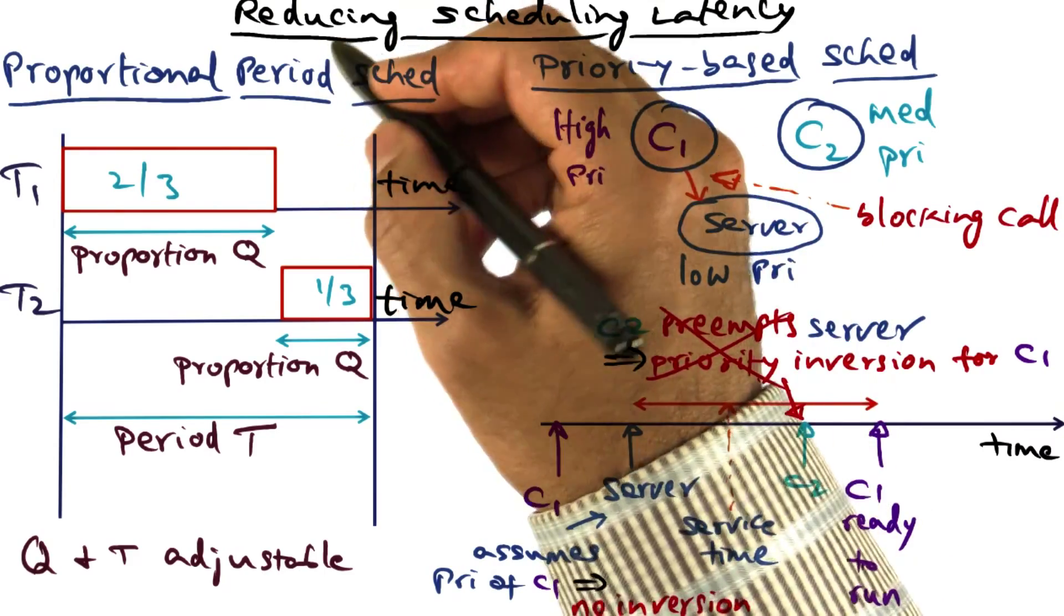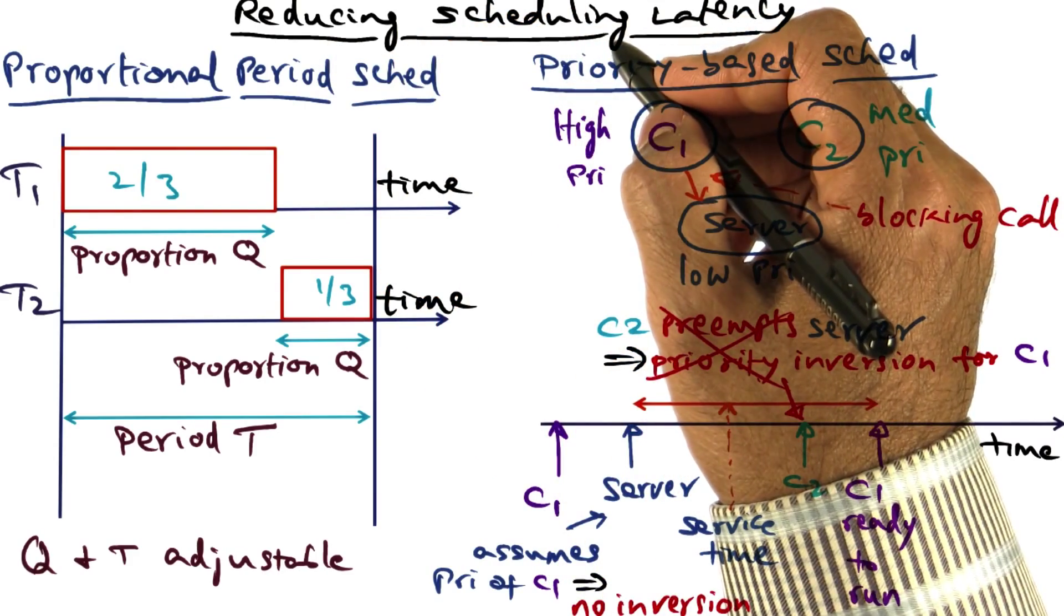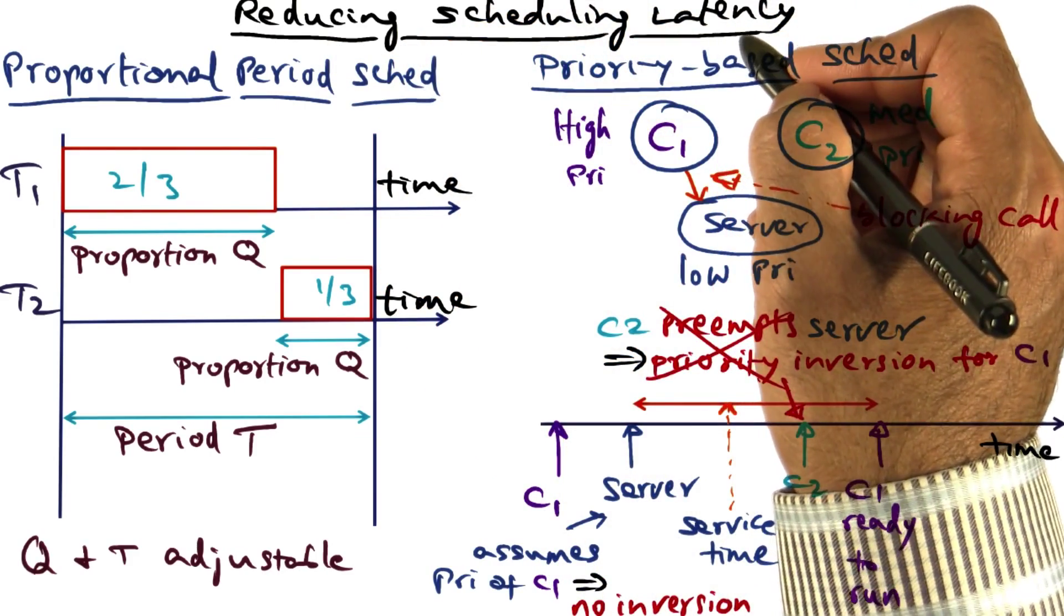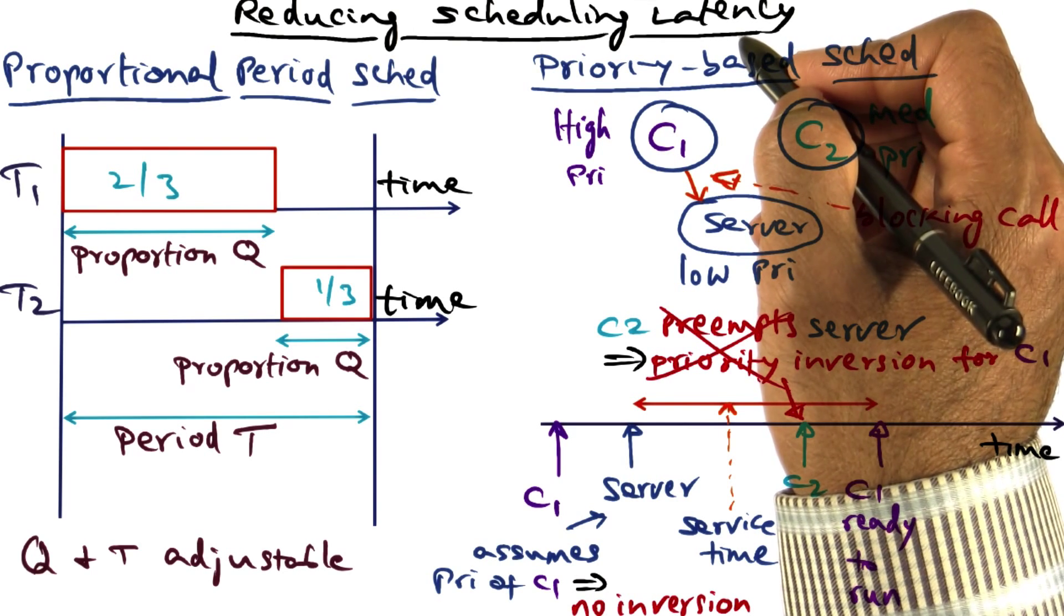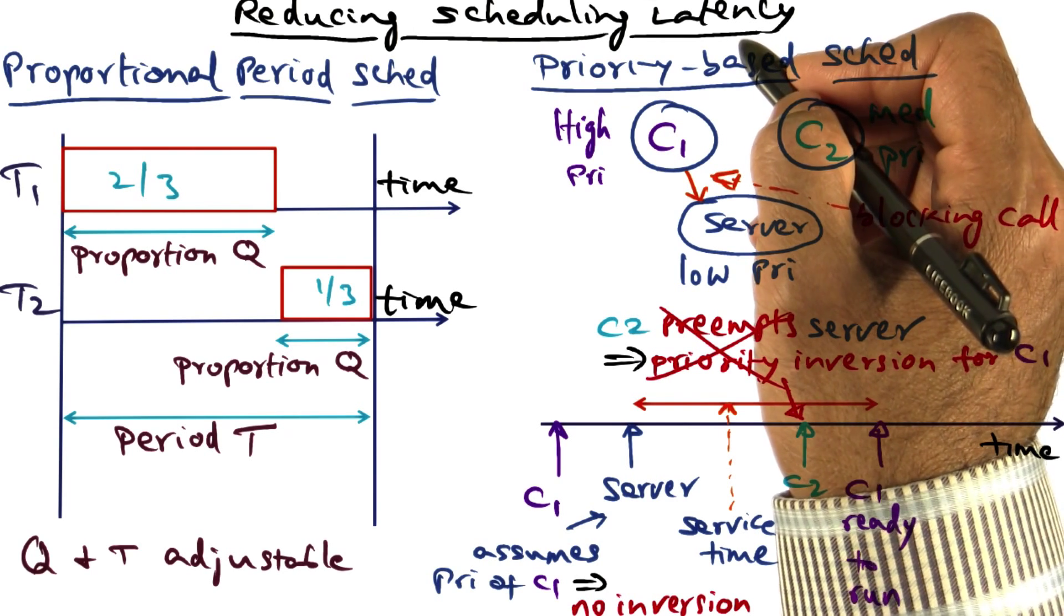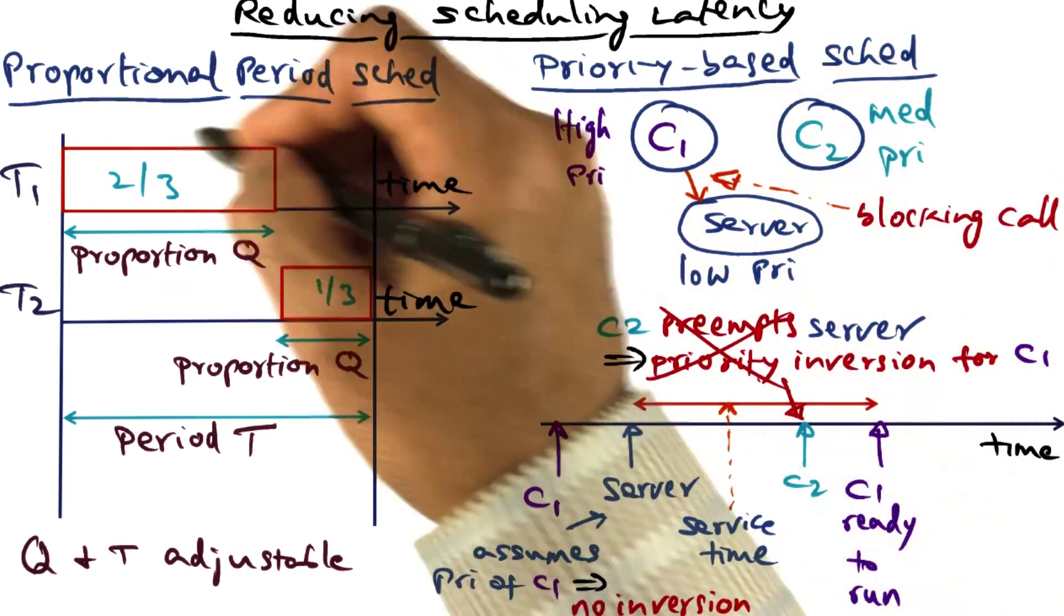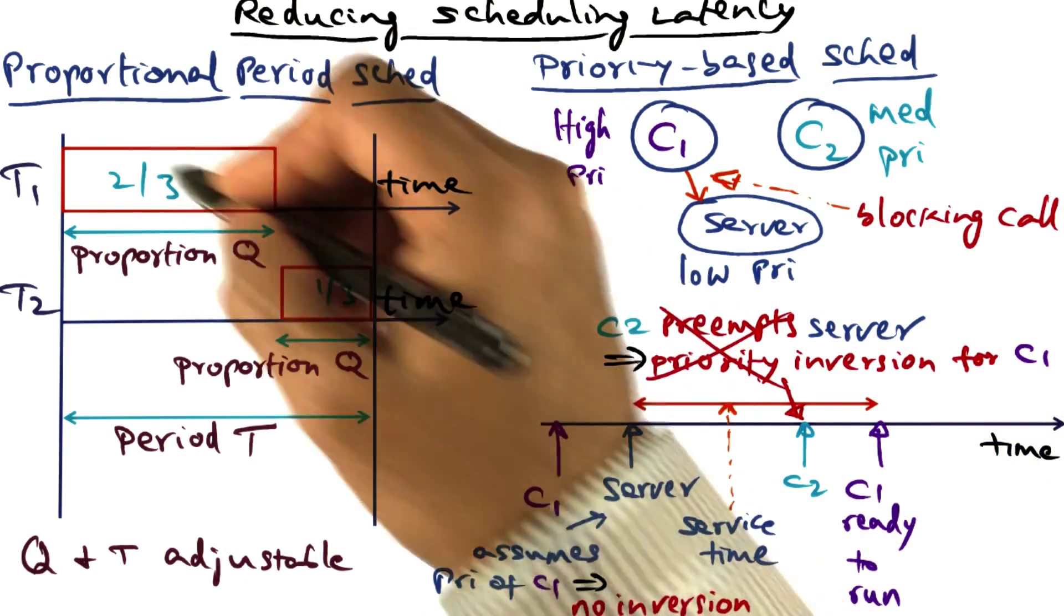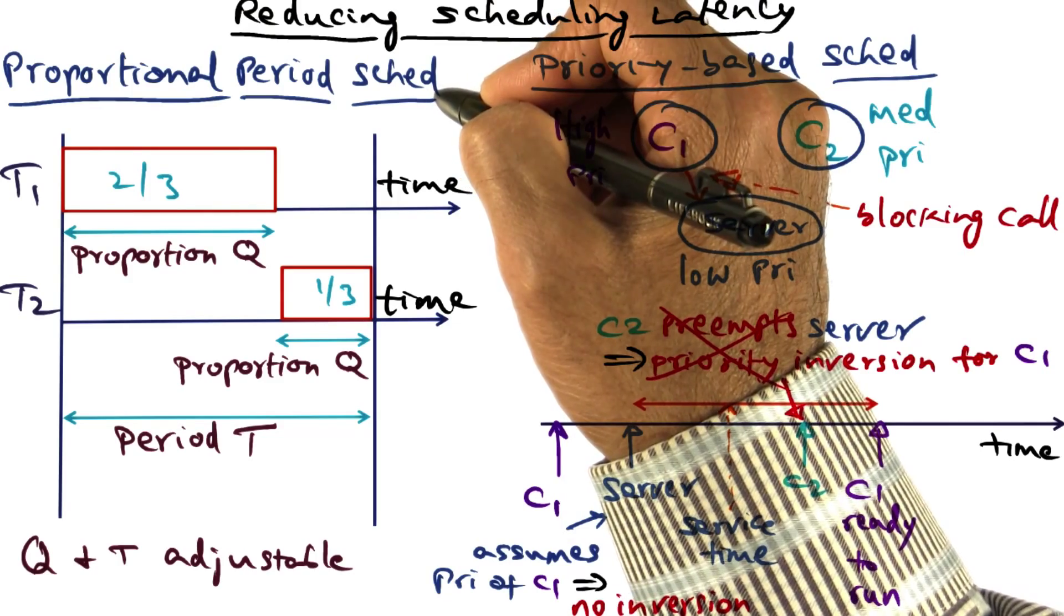So to recap, TS Linux avoids scheduling latency to shrink the distance between the event happening and event activation by doing this admission control through the proportional period scheduler,